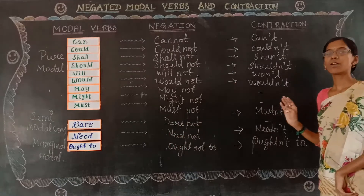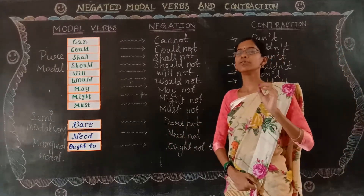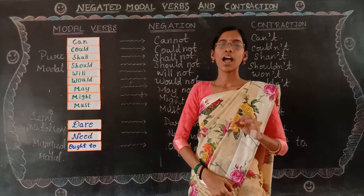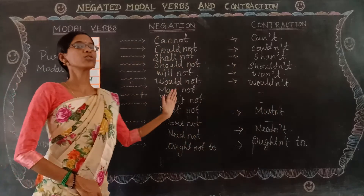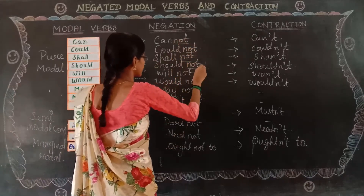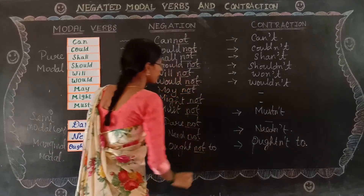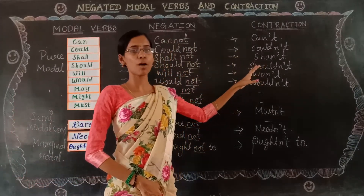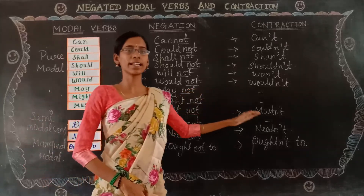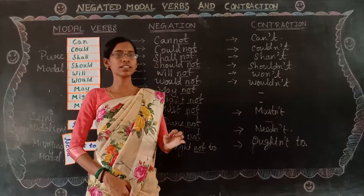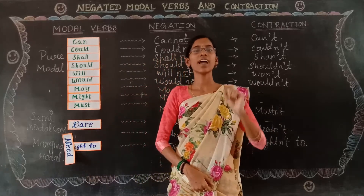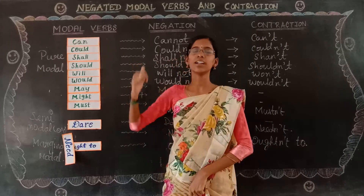So in this session we have learnt: the positive form of modal verbs — there are 12 in our syllabus; how to write the negative form by simply adding 'not' after each modal; and the contraction forms of modal verbs. For three words — 'may,' 'might,' and 'dare' — we do not have any contraction form. In our next session we will deal with another interesting topic. Be happy and thank you for watching.